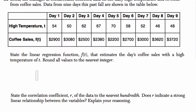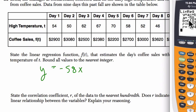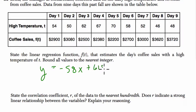So y is equal to negative 58x plus b, so it's plus 6182, plus 6182. But we want to write it in their format. So instead of y, it's f of t equals negative 58t plus 6182.